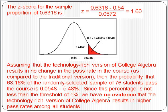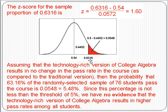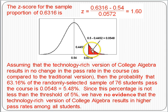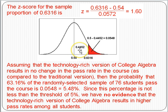Using this information and visualizing the picture, we want the probability associated with 0.6316. The z-score is the sample proportion minus the mean of 0.54, over the standard deviation — that gives 1.6. From the z-table, the probability associated with 1.6 is 0.4452. But we want the region of 0.6316 or greater, so we subtract 0.4452 from 0.5 to get 0.0548.